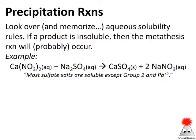First let's look at precipitation reactions. This is one of those places where you have to memorize some solubility rules — you don't have to sit down and memorize them for the sake of it, but after looking them up 20 or 30 times you'll remember the common ones. In this example we've got calcium nitrate and sodium sulfate reacting; doing a partner swap, calcium goes with sulfate and sodium goes with nitrate. One solubility rule: most sulfate salts are soluble except group 2 and lead, so calcium, being a group 2 element, forms a precipitate with sulfate ions.